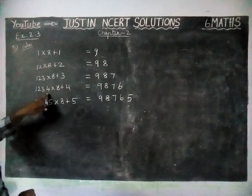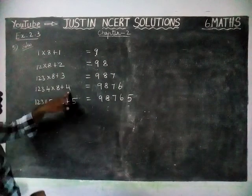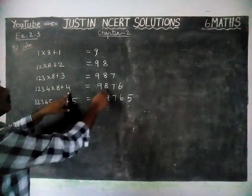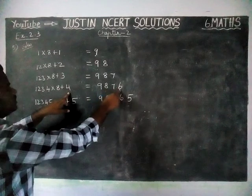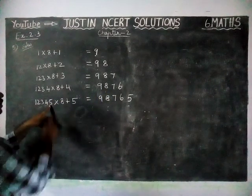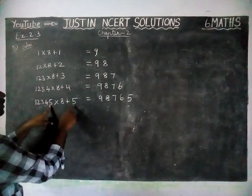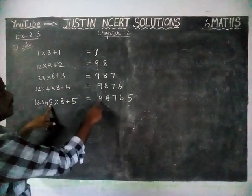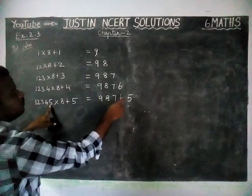Next, the same thing: here number 4 is there, so 4 digits come — 1, 2, 3, 4. Here number 5 is there, so 5 digits come — 1, 2, 3, 4, 5.